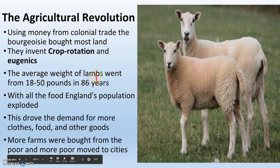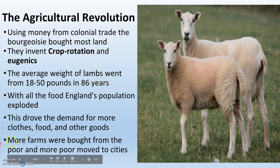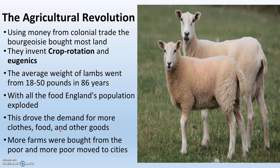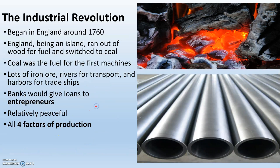Food — that box is getting checked. But clothes specifically we're going to have to talk about on the next slide. More and more farms are bought from the poor, and more poor people are moving to cities. So most of the population at this point is moving to the cities. Really the rich are the ones with all the land and all the farms with the Agricultural Revolution.